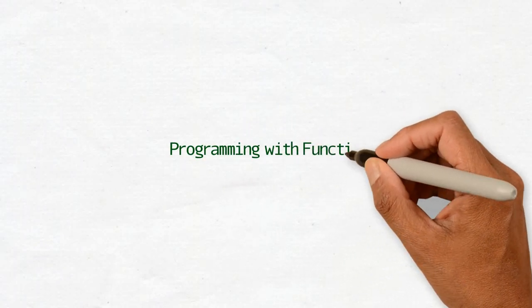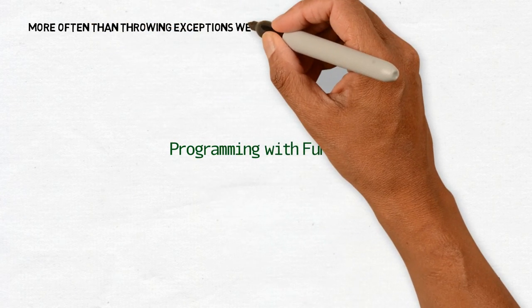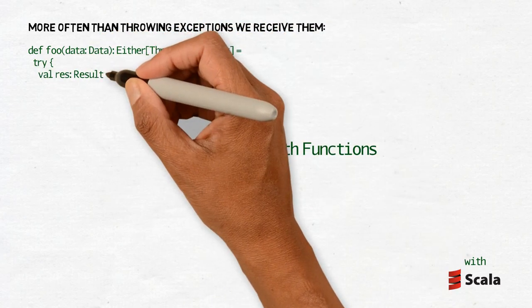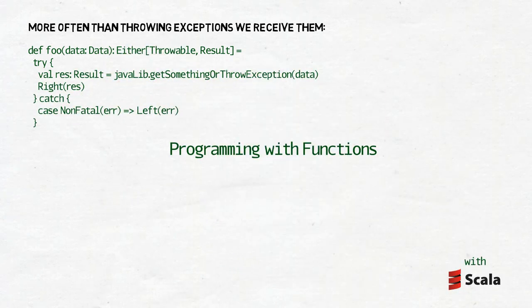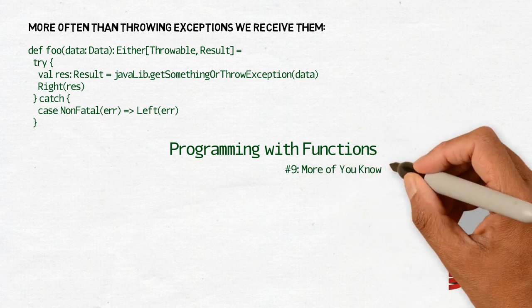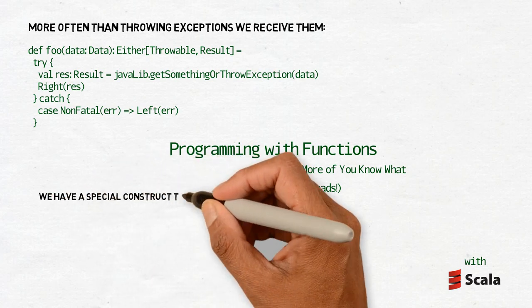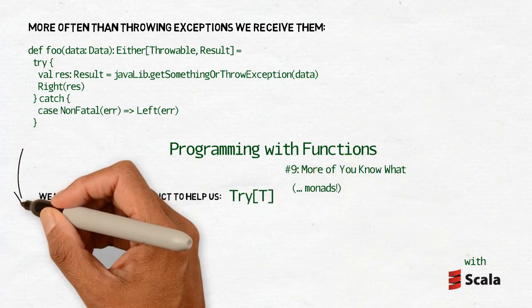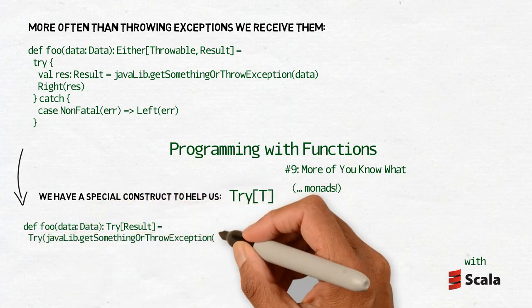In the previous episode we talked about option and either and how we can use them to avoid throwing exceptions. But much more often than throwing exceptions, we receive them from third-party libraries and try to handle them with try-catch clauses. And sometimes we rethrow them, which is really something we try to avoid here. You may think that either solves these problems, but exceptions are so common on the JVM that in Scala we have a special construct to help us.